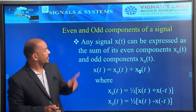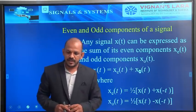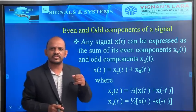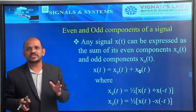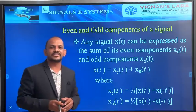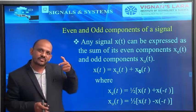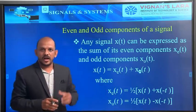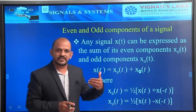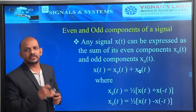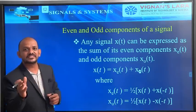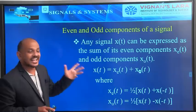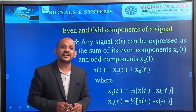Now we will go for even and odd components of a signal. Any signal is a combination of even and odd components. Let us consider x(t) as a signal. It is a combination of even components and odd components. The even component of the signal x(t) can be represented as xe(t), and the odd component may be represented as xo(t). So x(t) will be equal to xe(t) plus xo(t).